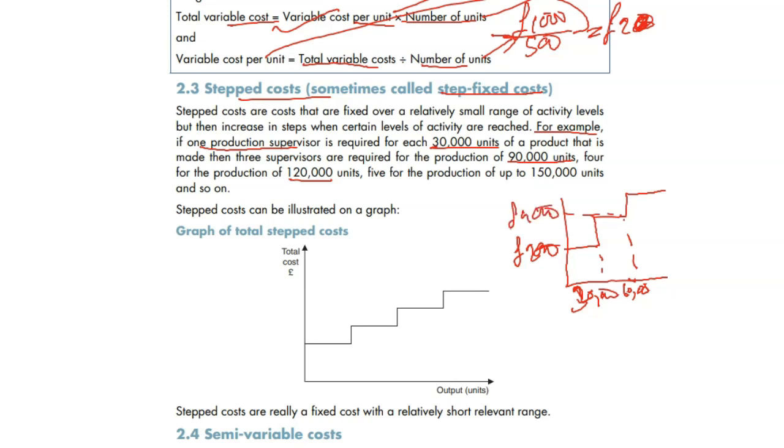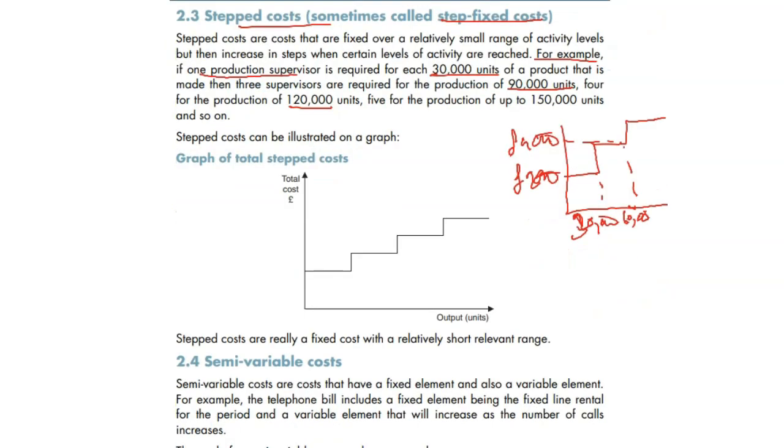We can give another example of a storehouse. Let's assume we can hold 500 items or units in one room, and the rent of that room is 500 pounds. But if it is more than 500, up to 1,000 - like 600 or any amount up to 1,000 - we need another room, we need to rent out another room. And the cost of both rooms is 1,000 pounds. That's your stepped cost. It remains fixed for a certain level of activity, then goes up, remains fixed again.